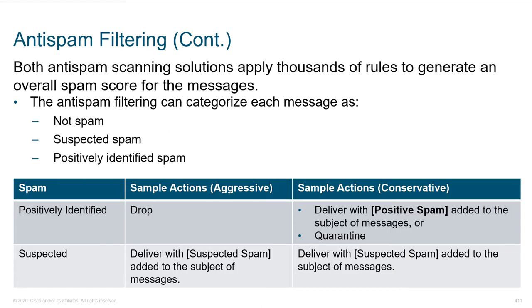Whenever we see spam, we say it's definitely spam or it's probably spam, and then we decide what we're going to do. If it's positively identified, we'll drop it. If it's suspected, we can deliver it but inject the word 'suspected spam' right into the subject line. Every time the recipient gets a message we think is spam, it'll have that label bolted in. What's cool is that they can easily create rules in their mail client to take some action based on our adding of this keyword or tag to the subject line.